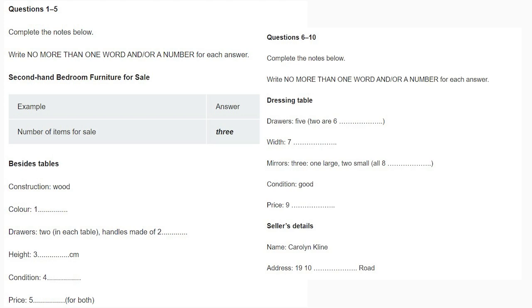Hello, Carolyn speaking. Hello, my name is Lincoln Faraday and I'm ringing to see if you still have the bedroom furniture that you advertised for sale. Yes, there are three items left. Two bedside tables and a dressing table. Oh good, they're just the items I'm after. Tell me, what's the construction of the bedside tables? I mean, what are they made of?